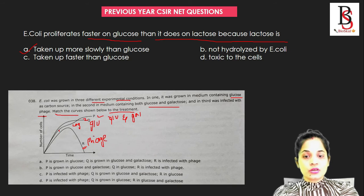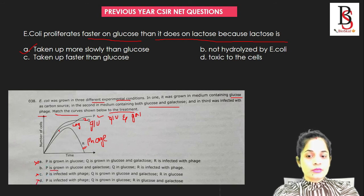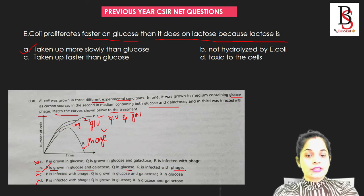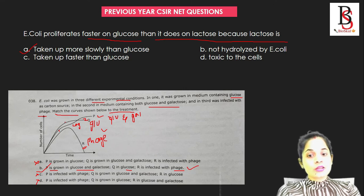Looking at the options: P represents diauxic growth utilizing glucose and galactose, Q represents growth on glucose alone, and R represents growth infected with a phage. Option A is wrong, option C is also wrong, option B is also wrong — wait, option B is the correct answer because P is grown in glucose and galactose, Q is grown in glucose, and R is infected with a phage. If you know how the diauxic growth curve looks, you can easily solve this question, and this question carries four marks.